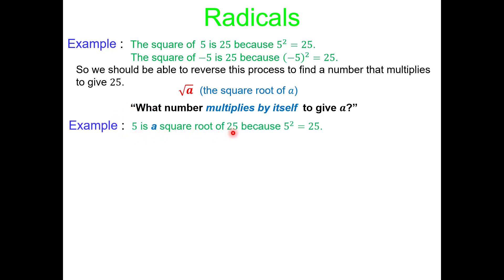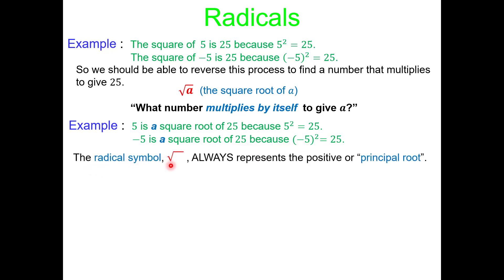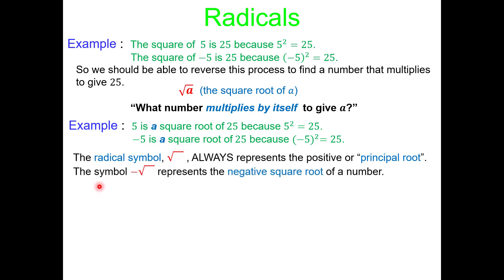5 is the square root of 25 because 5 squared equals 25. Negative 5 is also a square root of 25 because of the same idea. Now the radical symbol always represents the positive or principal root. By definition, this symbol represents only the positive answer. So if you want to find the negative square root, you have to put a negative in front of the radical symbol.